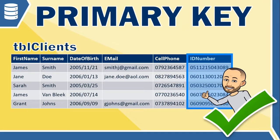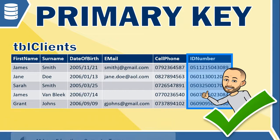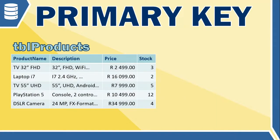ID number meets our two rules, and even though cell phone is also a potential option, I know everyone has an ID number — but I don't want to be in a situation where someone doesn't have a cell phone number. Technically either one is suitable, but one is slightly better. If we forced everyone to have an email address, that could also work as a primary key — but not in this table because of the blank email fields.